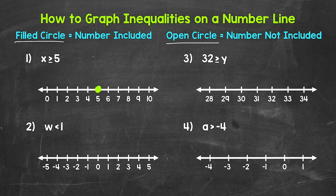Now we need to represent the greater than five part. So we need to draw an arrow pointing to the right — the direction of all of the numbers greater than five. And now our inequality, x is greater than or equal to five, is graphed on the number line. The filled circle shows we are including five, and then the arrow represents all of the numbers greater than five. These are our solutions.